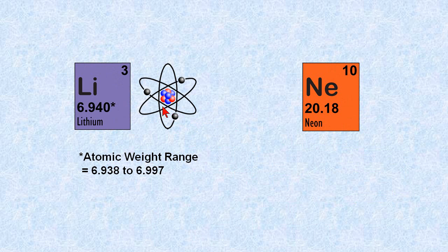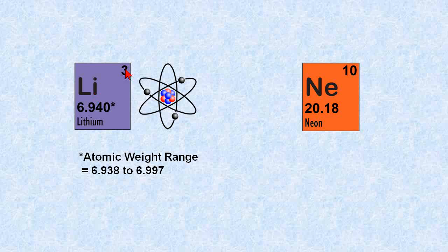Next, let's look at lithium and neon right away. Lithium, if you look at it, it means it has three protons. Neon has 10 protons. The atomic weight is 6.940 for lithium. And for neon, it's 20.18.